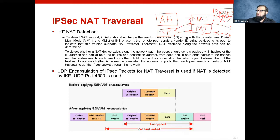In order to detect this situation, IKE's protocol detects NAT, and based upon IKE's NAT detection, ESP instructs you to use the UDP header.